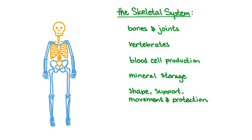The adult human skeletal system consists of 206 bones, as well as all of the joints that connect them. The skeletal system is a feature of some organisms called vertebrates. Specifically, mammals, reptiles, birds, amphibians, and some fish have bony skeletons similar to ours.